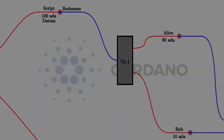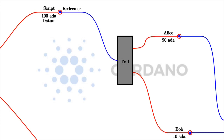There are two parts to a smart contract: an on-chain part and an off-chain part. The on-chain part is about validation — it allows nodes to validate a transaction and decide whether it's allowed to consume a given UTxO. The off-chain part lives in the user's wallet and constructs and submits suitable transactions. Both are important, but for now I want to concentrate on the on-chain part.